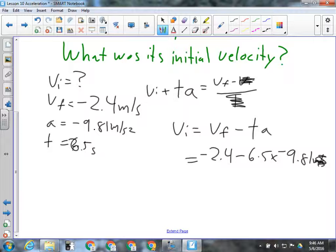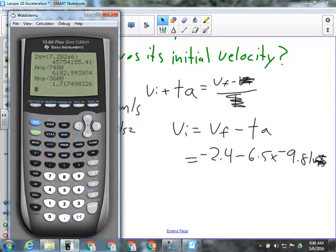So is this going to give me now a positive number? Yes. And should it? Yes, I initially threw this thing up. That's why including the signs is so important. I've got a negative number here, but now I'm going to subtract a negative number, which is going to give me a more positive number, which is what I should end up with. All right, so negative 2.4 minus 6.5 times negative 9.81.